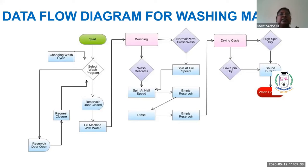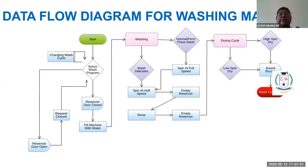For the machine to start, the door must be closed. If the door is not closed, it requests the user to close the door before proceeding. The sequence is: close the door, fill the water, wash, rinse, dry, and then a beep sound signals that the washing is complete.